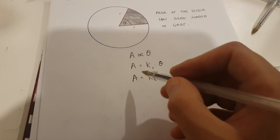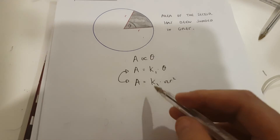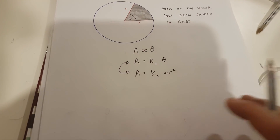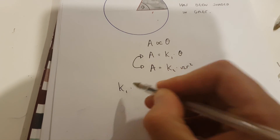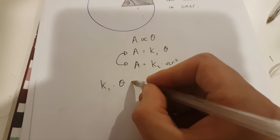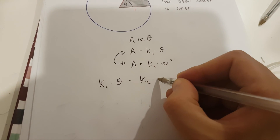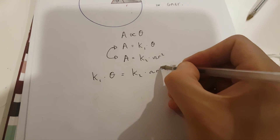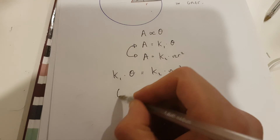Now these two formulas are going to be equivalent to one another. This means that k1 multiplied by theta is going to be equal to k2 multiplied by pi r squared.